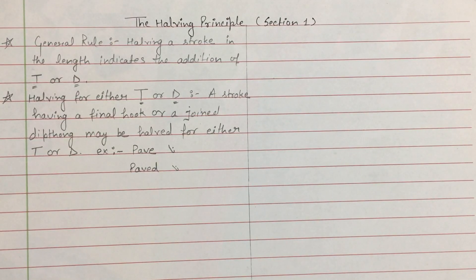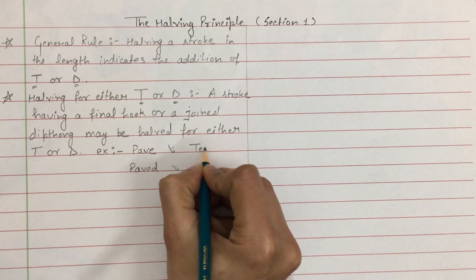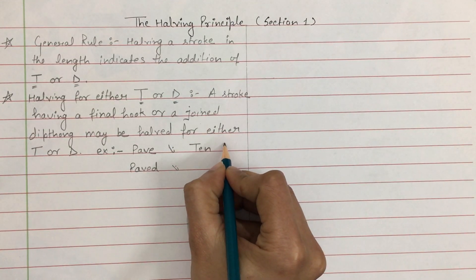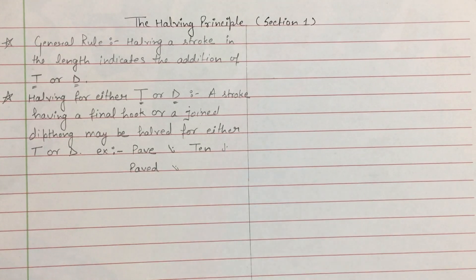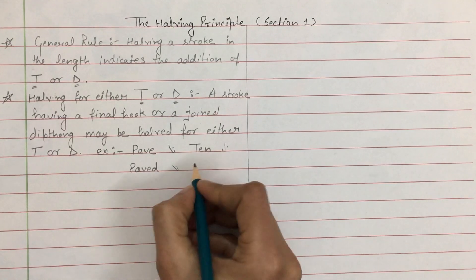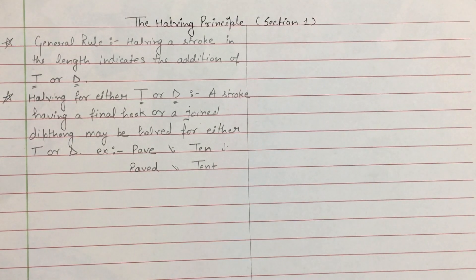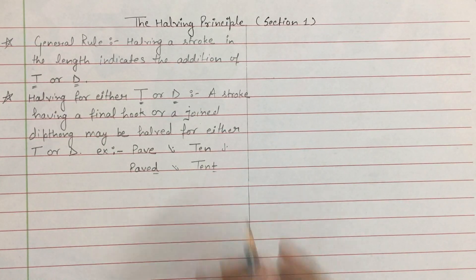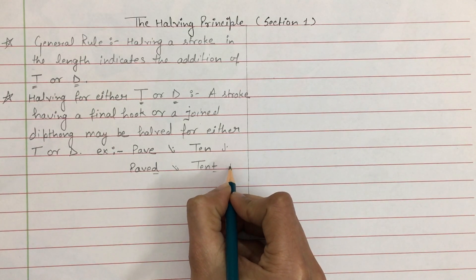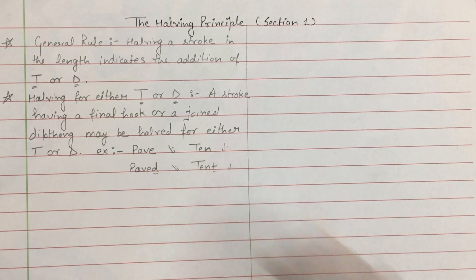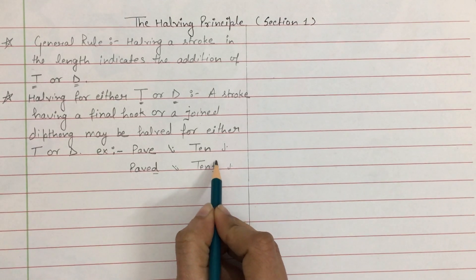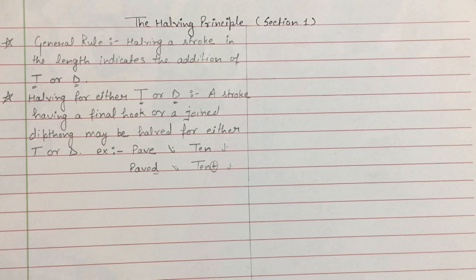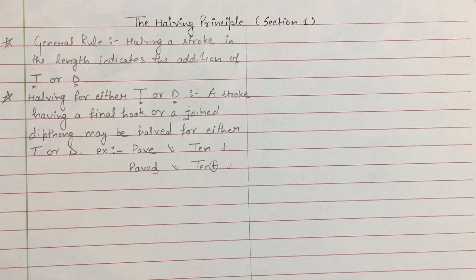अगर आपको word लिखना है 'ten', normally लिखेंगे — यहाँ पर भी final hook है, condition fulfill हो रही है। T, E and N की hook लगाते हुए। But अगर आपको लिखना है word 'tent', तो T की addition करनी है — half करते हुए T को लिखेंगे, T and N, E के vowel को लगाएंगे। T इसमें add हो चुका है।